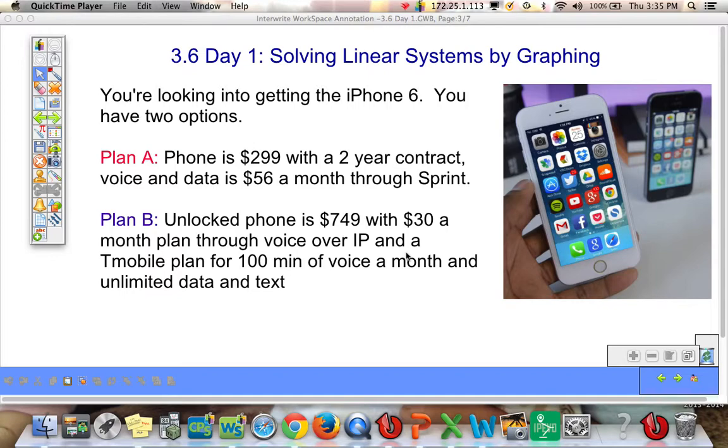Let's say Plan B, you don't want to go with Sprint. You want to get the unlocked phone, which the same phone, which would be a 64 gig, would be $749. And let's say you could find a $30 a month plan through voice over IP, which gives you unlimited voice for free.